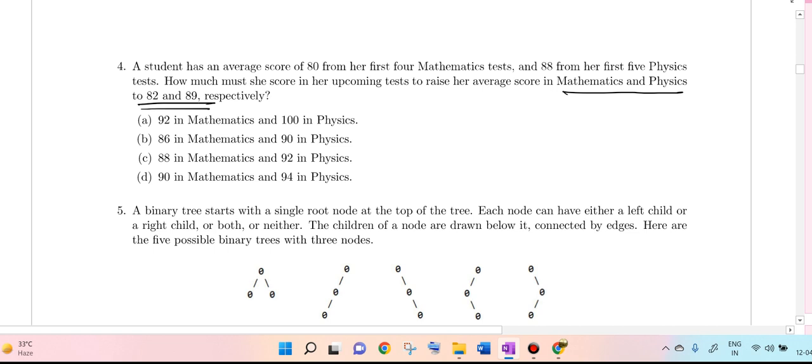Here the average of the first 4 scores in mathematics is 80, so the sum is 320. Suppose the score of the fifth test is x. Then (320 plus x) divided by 5 equals 82. Solving this we get x equals 90, very easy. It is 90 in the fifth test to raise the average marks to 82.